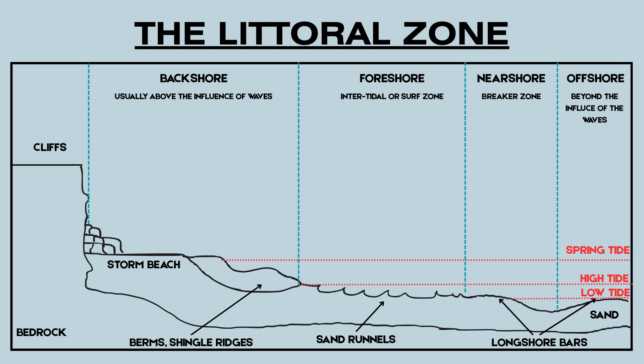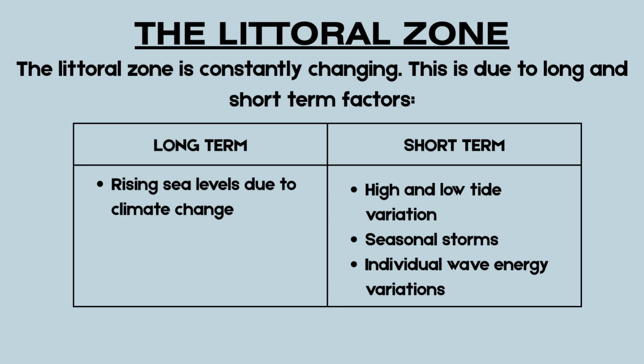Tides are key in this zone. Low tide exposes the foreshore, high tide covers it, and spring tides — the highest — can reach into the backshore, especially during storms, influencing how and where coastal processes occur. The littoral zone is constantly changing due to long and short-term factors. In the long term, climate change and the resulting changes in sea level influence the littoral zone. In the short term, the variations between high and low tides and the energy differences between individual waves can impact the environment.